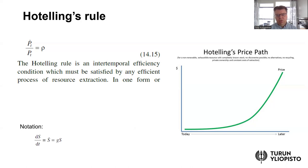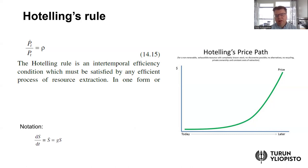So Hotelling's rule predicts that initially extraction would start with a lower price, and over time, as the resource reserve becomes smaller and smaller, there is a constant growth in price. For example, hypothetically, if we had a 5% increase in price constantly over time, then eventually this price path would look something like what is shown in the diagram on the right-hand side.